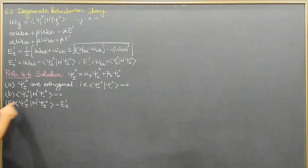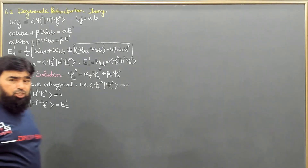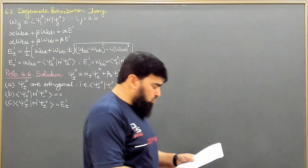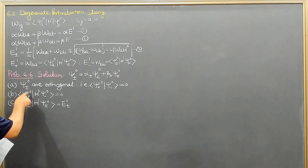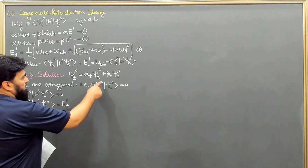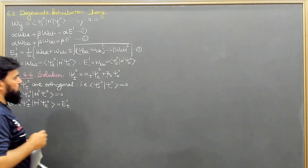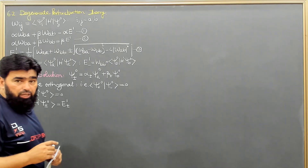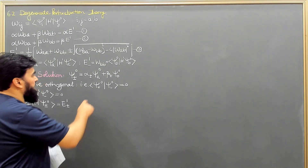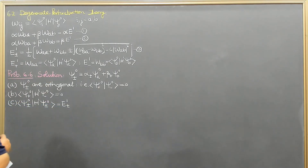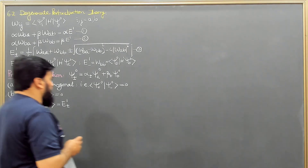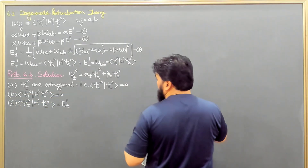In order to solve Part A, we need to prove that ψ+⁰ and ψ-⁰ are orthogonal — perpendicular to each other — so that their inner product equals zero. We will start from the expressions for ψ+⁰ and ψ-⁰.